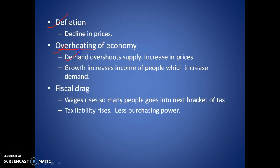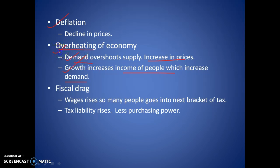We have deflation — declining prices. Then there is overheating of the economy: demand overshoots supply and prices increase. Growth increases the income of people, which increases demand — that is why demand overshoots supply and we call it overheating. The ultimate effect is that it increases inflation and decreases growth.